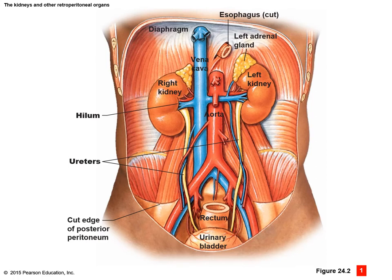Here we can see that same overview with our two kidneys, one on either side of the body, with the right kidney being slightly lower than the left kidney due to the position of the liver just above and in front of it. On top of each kidney is an adrenal gland. Connected are the ureters, and there are three main structures that insert into each kidney: the renal artery, renal vein, and the ureter. The ureters connect down into the urinary bladder, and the urethra — slightly different in length between men and women — conducts urine to the outside of the body.